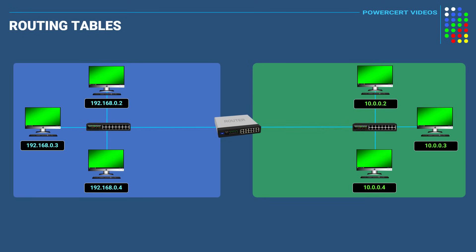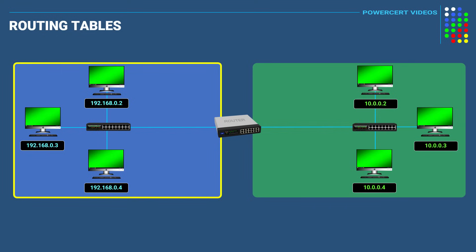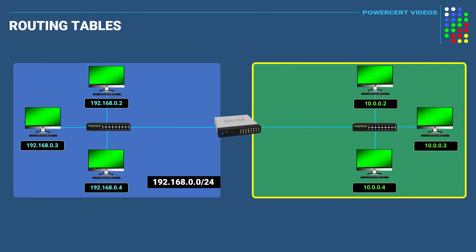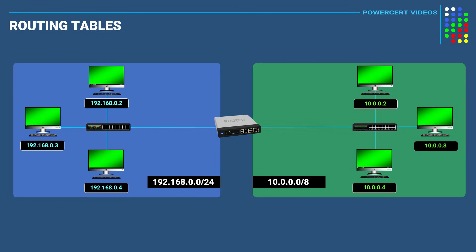Here we have two networks, and the networks are separated by a router. Each network is using a different IP address group with the computers having their own IP address. This network is using the 192.168.0.0 IP address group, and the other network is using the 10.0.0.0 IP address group. Right now the computers in each network can only communicate with the computers inside their own network. However, in order for the computers on these networks to have the ability to communicate with computers on the other network, we have to configure the router and a routing table, because a router has the ability to allow communication between networks.